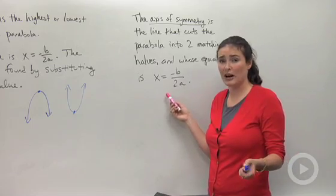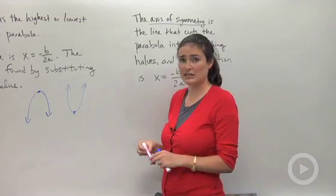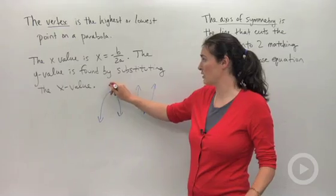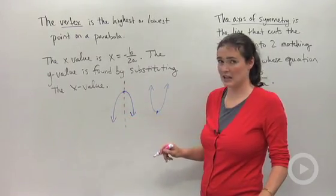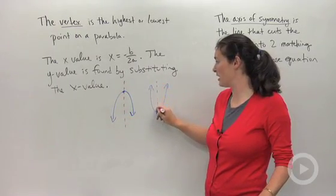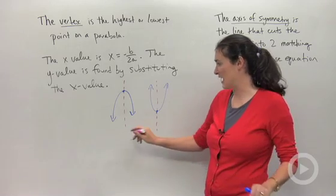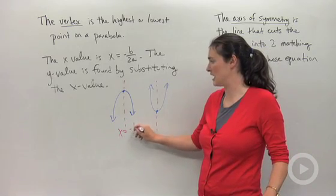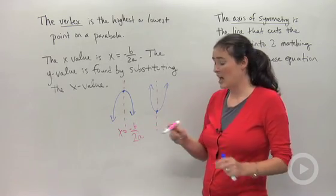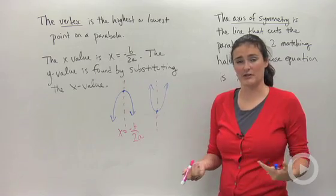I can show you what the axis of symmetry looks like. It's the vertical line that goes through the vertex. It cuts the parabola into two matching halves, and it has the equation x equals negative b over 2a, just like the x-coordinate of the vertex.